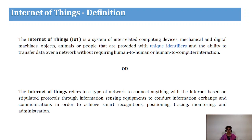The definition of IoT: Internet of Things is a system which is interrelated with mechanical or computer devices, animals, or people that are provided with unique identifiers. Without human-to-human or human intervention, we transfer data by using the Internet. It also refers to a network to connect anything with Internet-based protocols to conduct information exchange and communication in order to achieve smart recognition, positioning, tracing, monitoring, and administration.